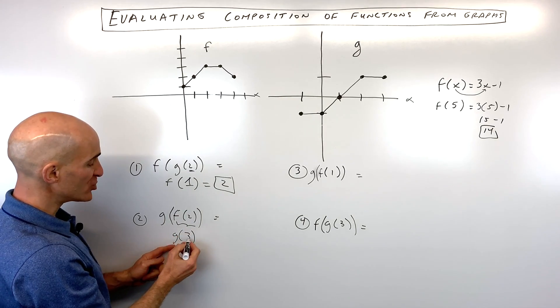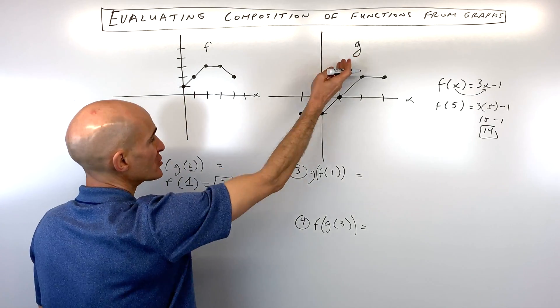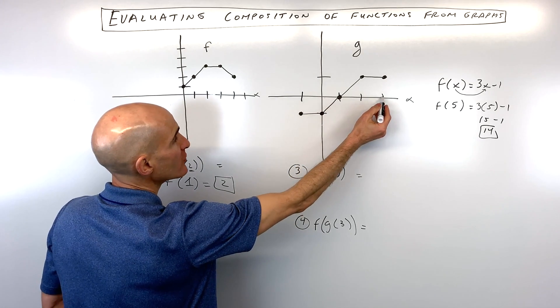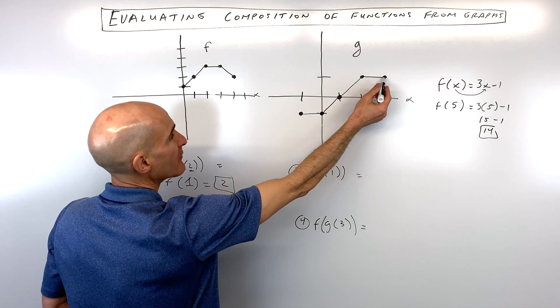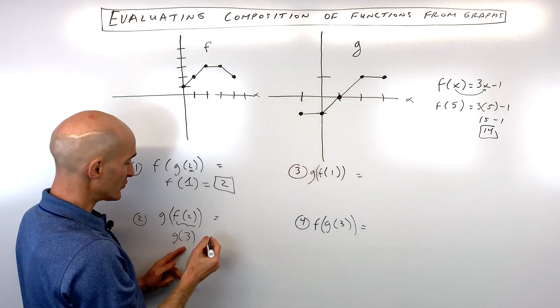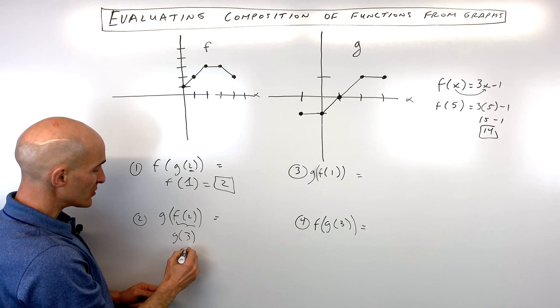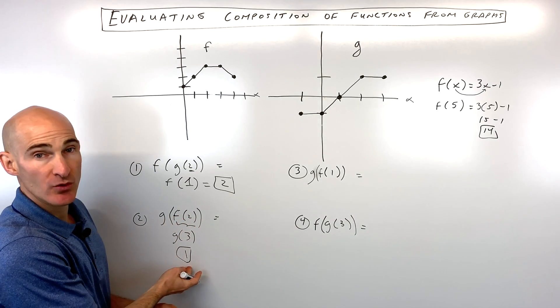So now we have to figure out what's g of 3. So we go to our g function. We say when x is 3, we go 1, 2, 3 on the x-axis. We go up to the graph. The y value is equal to 1. So this whole quantity here, g of f of 2, is equal to 1.